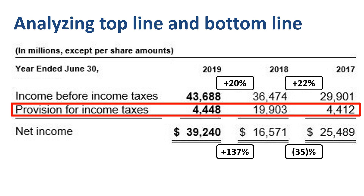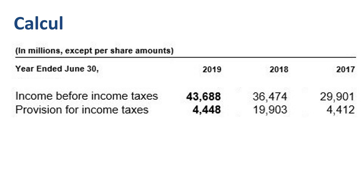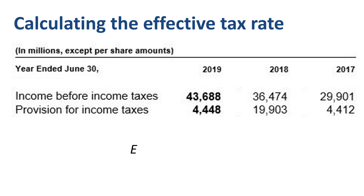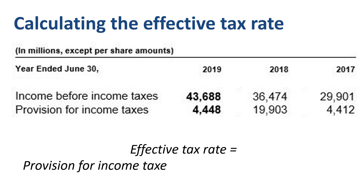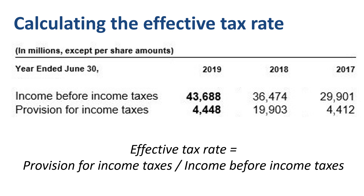Let's put that provision for income taxes in perspective by calculating the effective tax rate, simply dividing the provision for income taxes by the income before income taxes for each of the years. In 2017, $4.4 billion divided by $29.9 billion yields an effective tax rate of 14.8%. In 2018, $19.9 billion divided by $36.5 billion yields an effective tax rate of 54.6%. In 2019, $4.4 billion divided by $43.7 billion yields an effective tax rate of 10.2%.